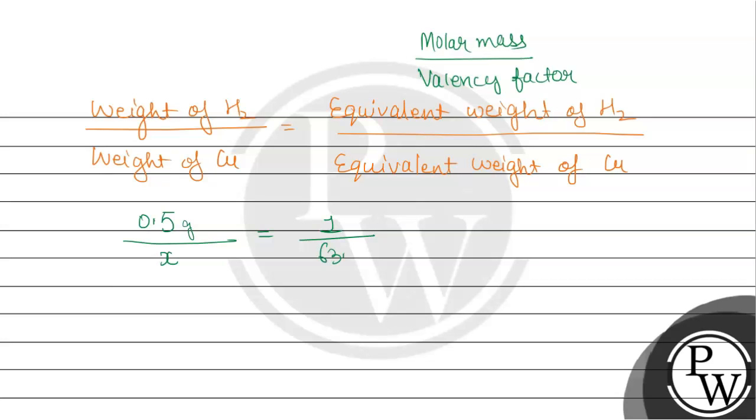Molar mass is 63.5 and copper sulfate forms copper 2 positive, so divided by 2. Cross multiply, so X will be equals to 0.5 multiplied by 63.5 divided by 2. 0.5 multiplied by 63.5 will be 31.75 and divided by 2, it will be 15.87.